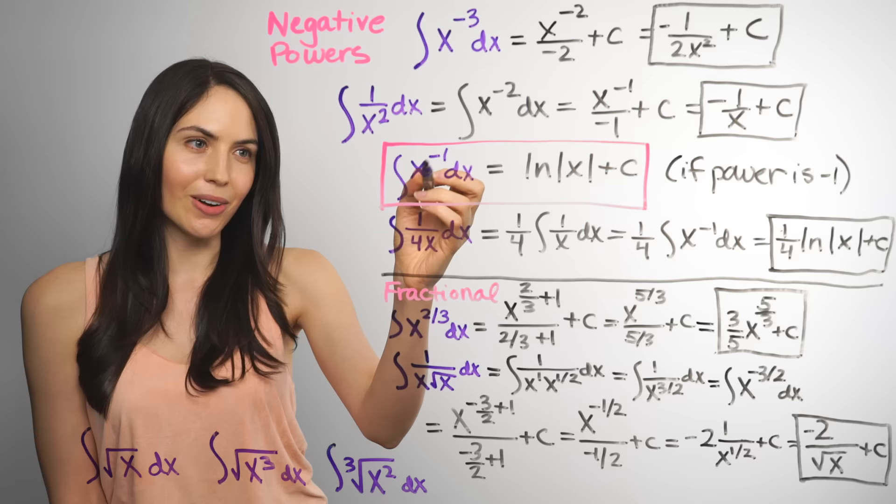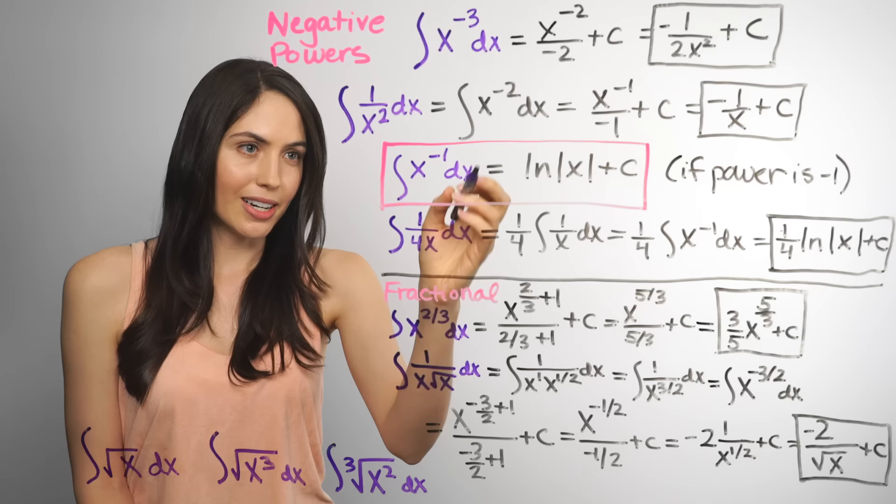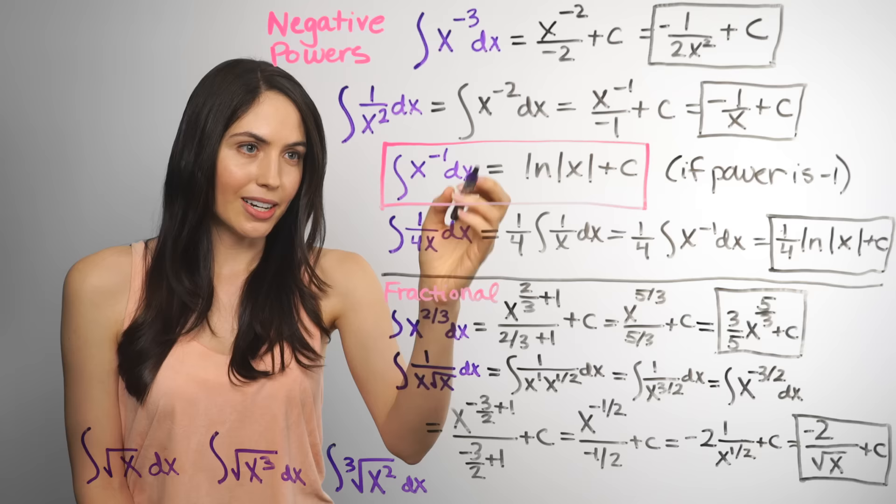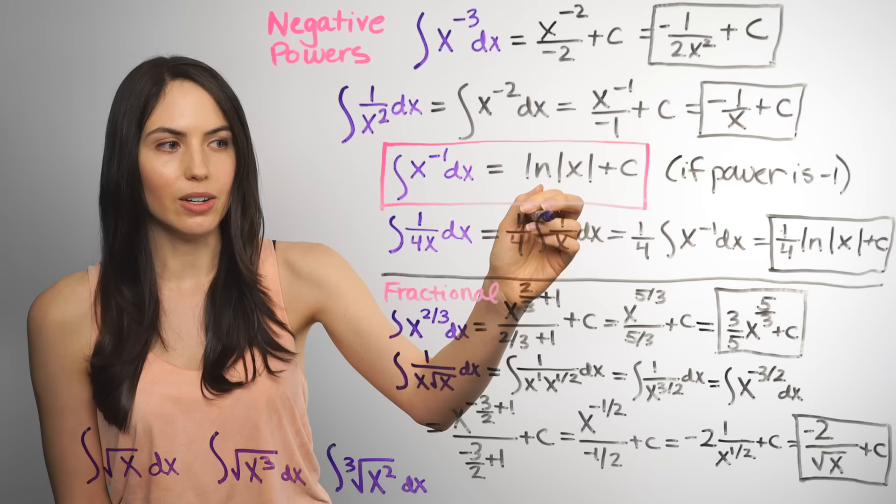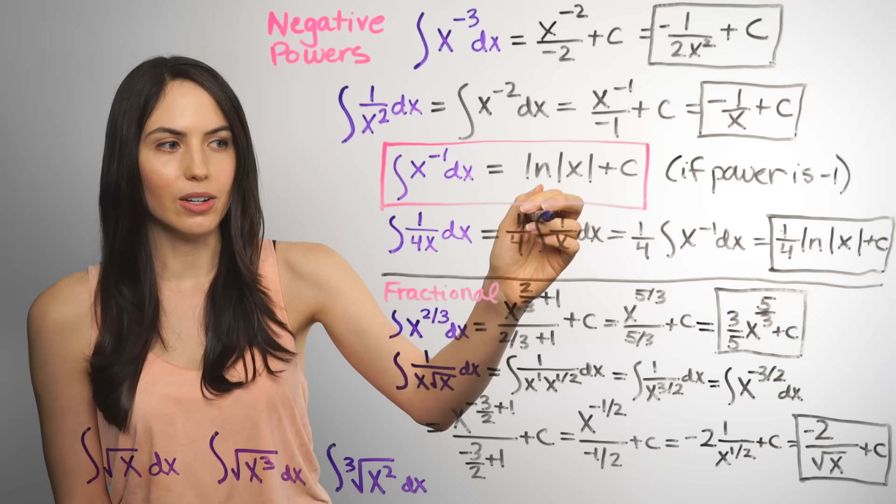But don't get too comfortable, because I snuck this one in here. Maybe you caught it already, but the power rule is not defined for a negative 1 power. If you look in a table of integrals, it's actually equal to natural log of absolute value of x plus c. So that's what that is. And it might actually take this form too, you might see 1 over x, that's the same. So that's also natural log of absolute value of x.